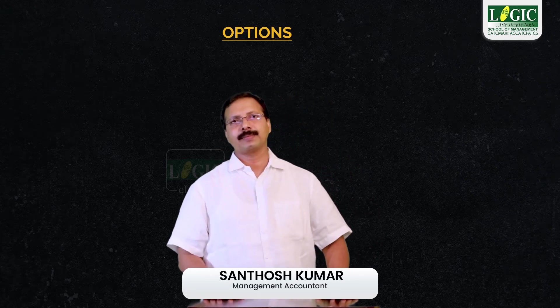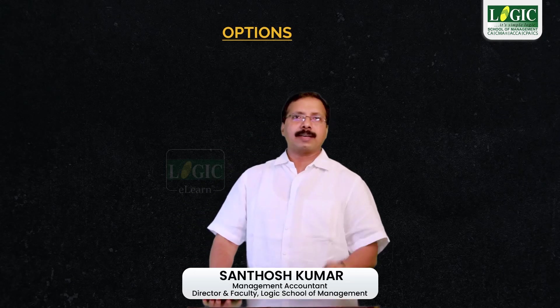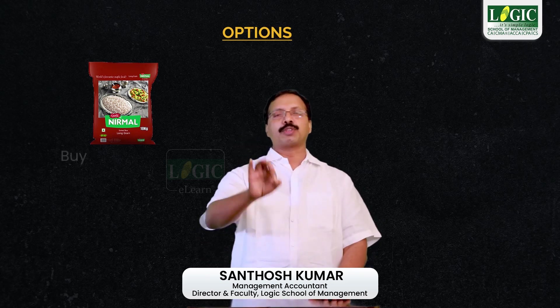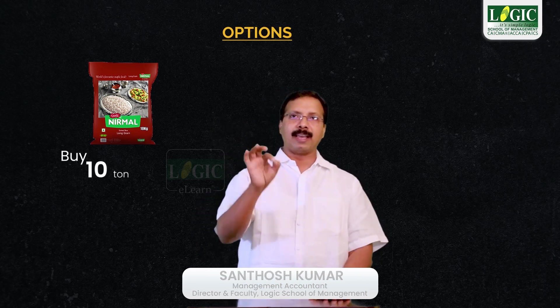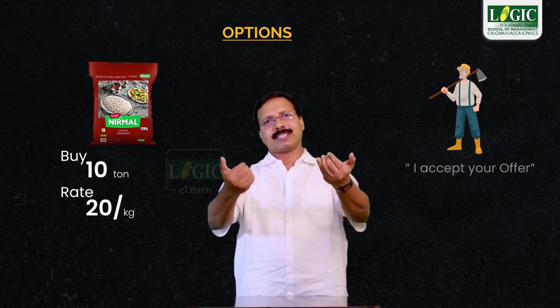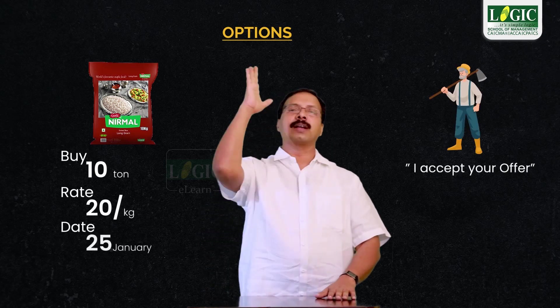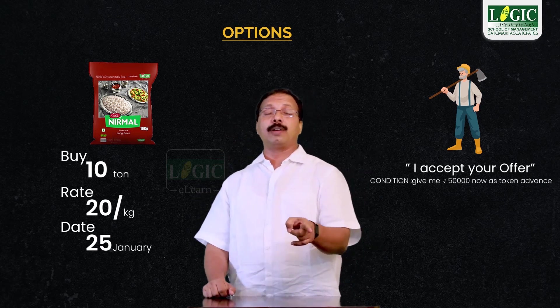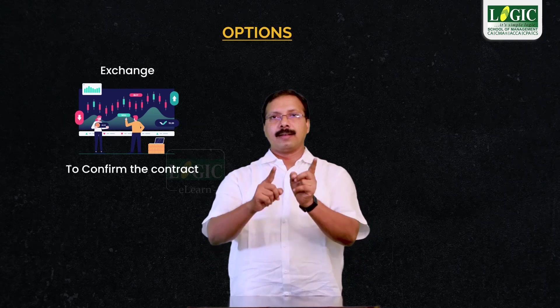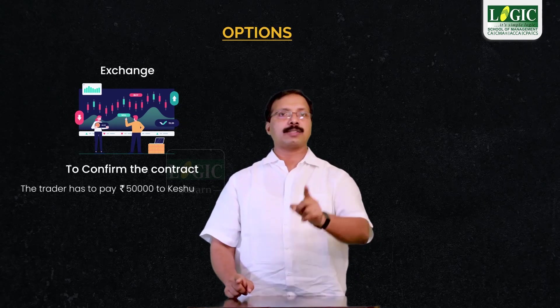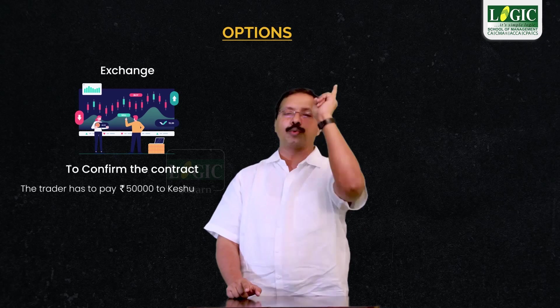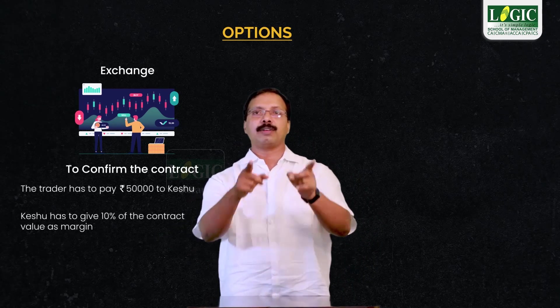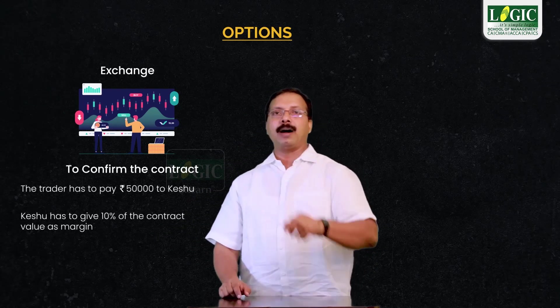We will continue with the same example. The rice mill owner, who deals in normal rice, promised to buy 10 tons of rice from Keishu at the rate of 20, and Keishu accepted but with one condition: you have to give me 50,000 rupees now as a token advance which is non-refundable. In order to confirm this contract, the rice mill owner has to pay 50,000 to Keishu, and Keishu has to give 10% of the contract value as a margin to the exchange.